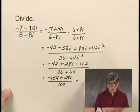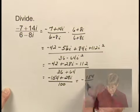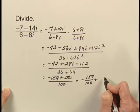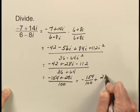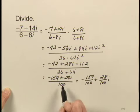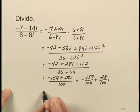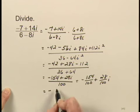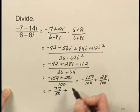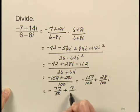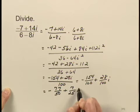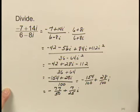So I can write this now as negative 154 over 100 plus 28 over 100i. I've just divided 100 into each of these terms in the numerator. And I can simplify each of those. I would have, after I simplify, negative 77 over 50 plus 7 over 25i. So this is the quotient that we were looking for.